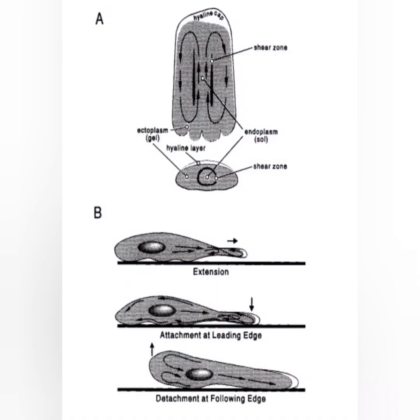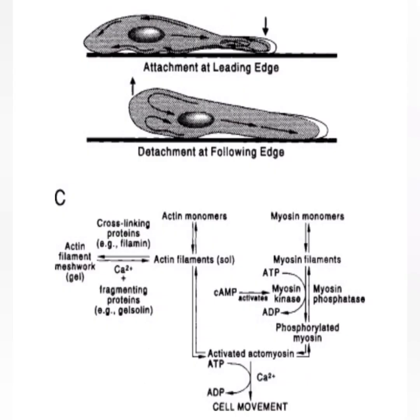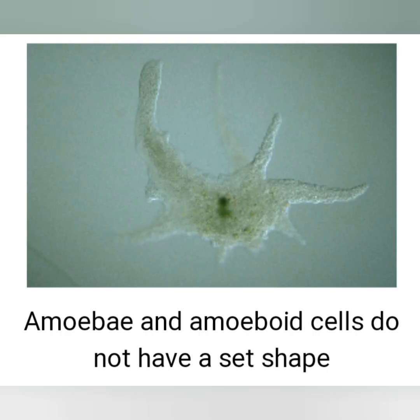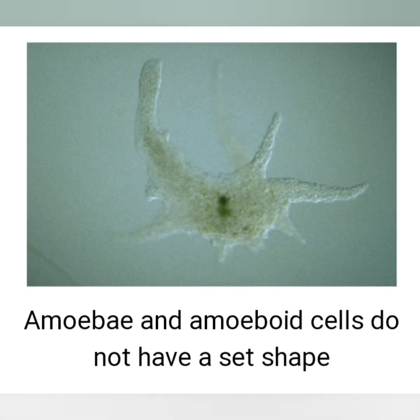Examples of amoeboid cells include our white blood cells that carry out phagocytosis, known as macrophages, and the cells in the middle layer of sponges.